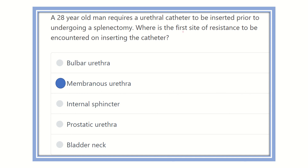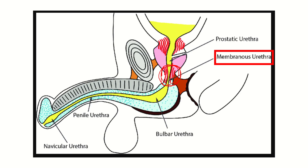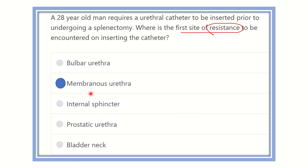So our final answer is the membranous urethra. The maximum resistance will develop here because when the catheter passes through the bulbar urethra — which is the dilated part — resistance decreases, but at the membranous part resistance increases. The membranous urethra shows the most resistance during the catheterization procedure.